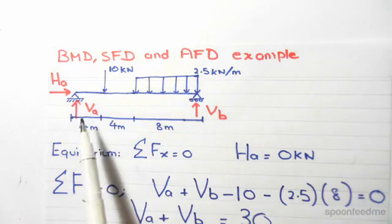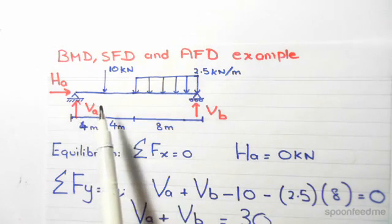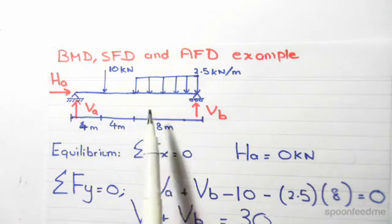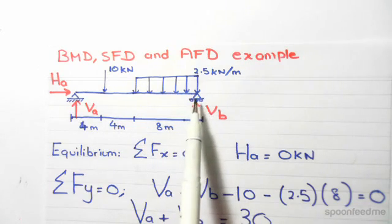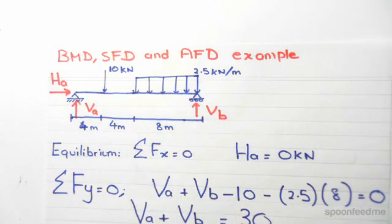Four meters from the left, we have a 10kN downward point load. And from the right hand side, we have a UDL that spans eight meters. The magnitude of this UDL is 2.5kN per meter.